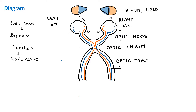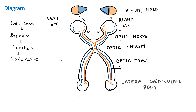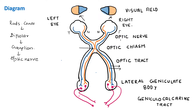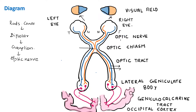Once fibers travel through the optic tract they reach the lateral geniculate body, which is the second order neuron. From the lateral geniculate body these form what is known as the geniculocalcarine tract, or the optic radiation, and reach our occipital cortex. The primary visual center is the calcarine sulcus — that is why it is called the geniculocalcarine tract, going from the geniculate body to the calcarine sulcus of the cortex.